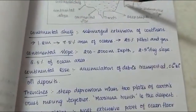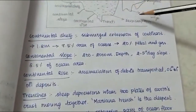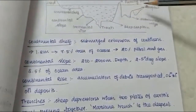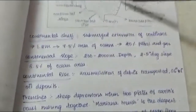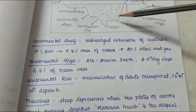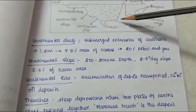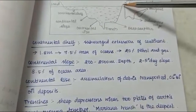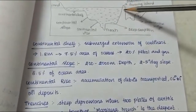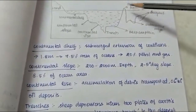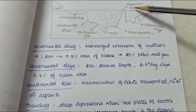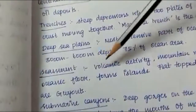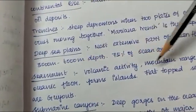This is the Sea Mount, Submarine Ridge, and Guyot. The Sea Mount and Guyot result from volcanic activity in the ocean. This is the lava, which solidifies to form an island. This is the Sea Mount — it has a sharp top area, formed by volcanic activity.